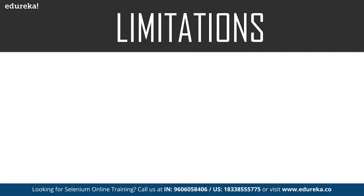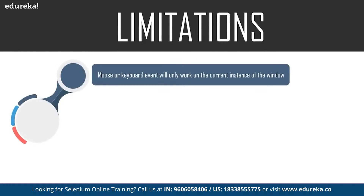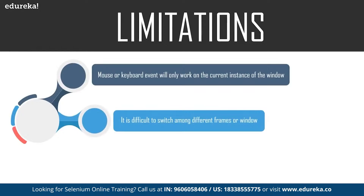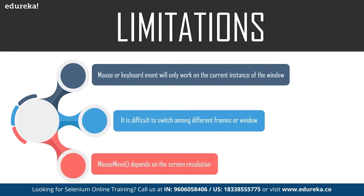Now let's look at the limitations of the Robot class. The mouse or keyboard event will only work on the current window, and it is difficult to switch among different screens or windows. For example, if a code is executing a Robot event but execution moves to another window, the mouse or keyboard event will still remain on the previous window. Methods like mouseMove depend on the screen resolution, so if you're using XY coordinates your tests will behave differently on different screens. If you're running tests in a virtual machine, script failure is more likely.